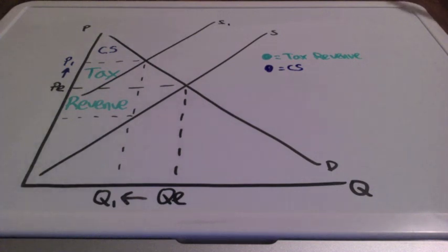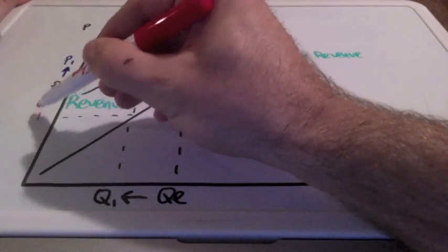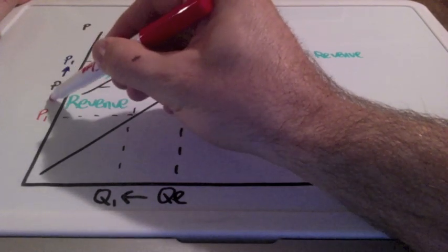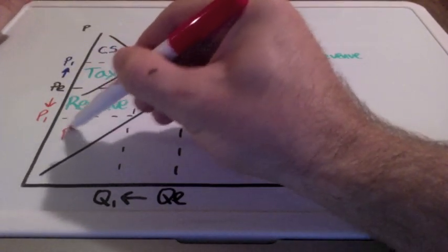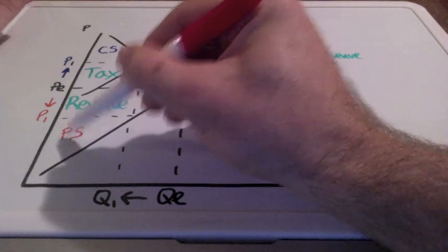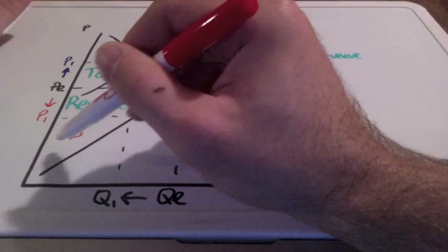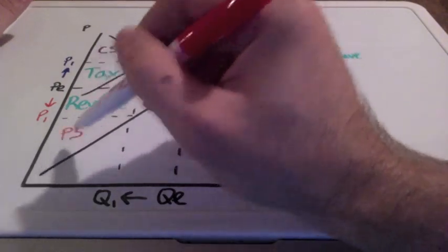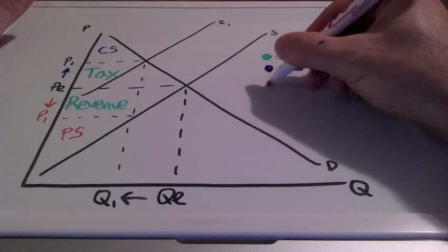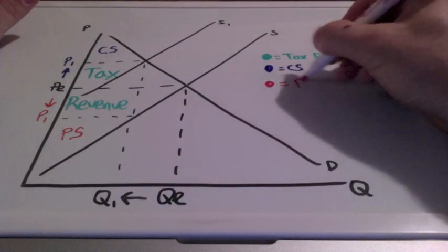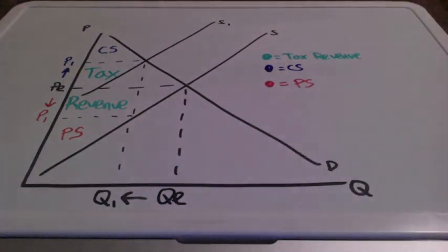But as we just said, the price consumers have to pay is not what producers get to keep. So our producer surplus is also going to decrease. This entire area represents producer surplus. They are losing revenue as a result of this tax. So this area in red represents producer surplus.